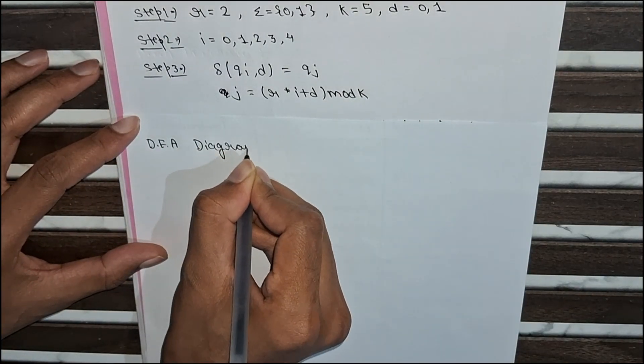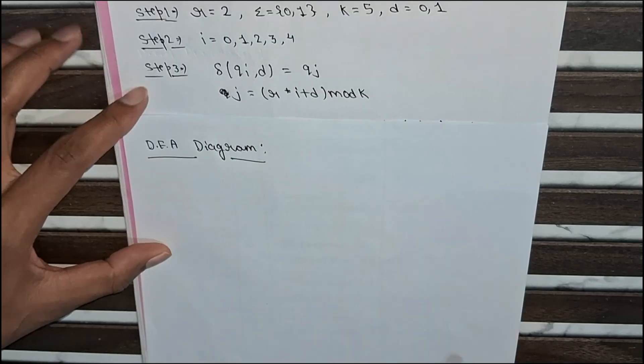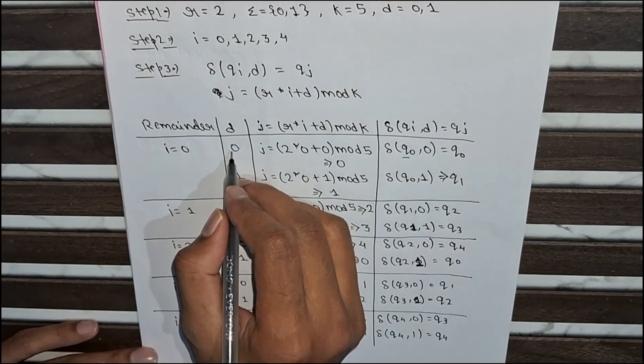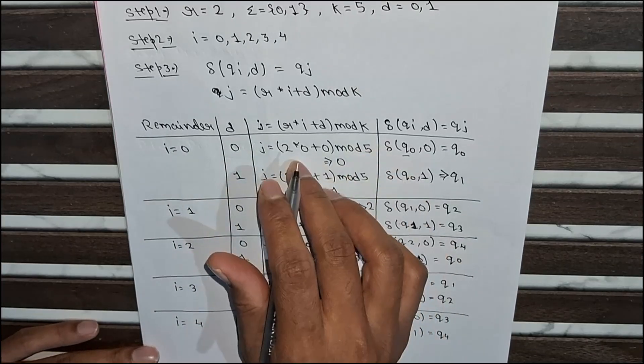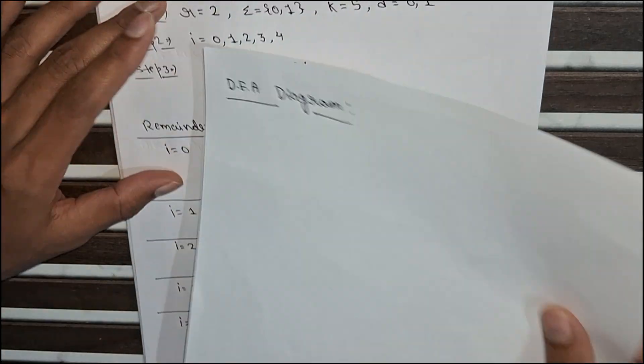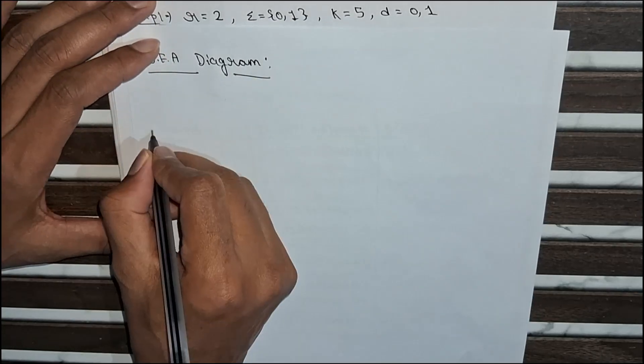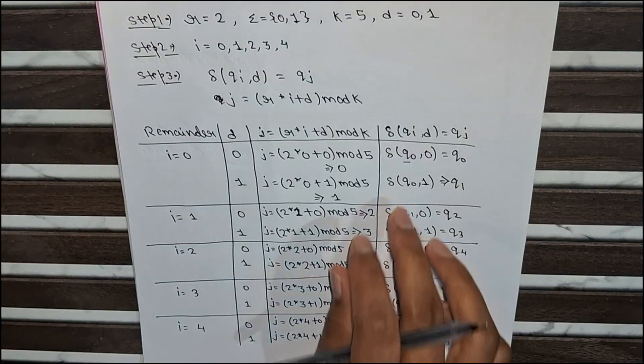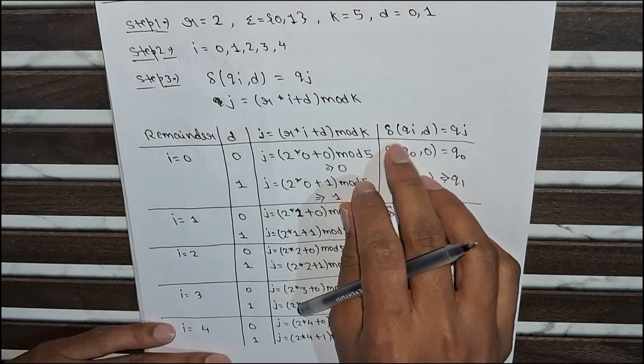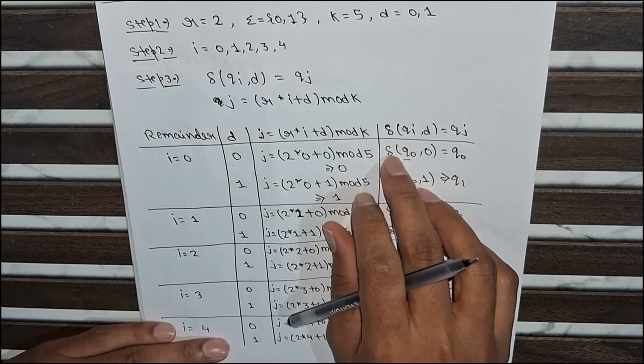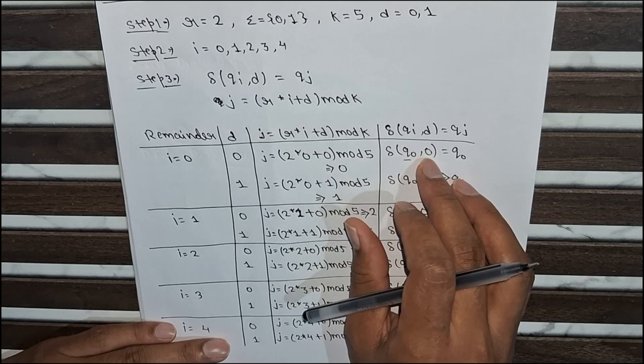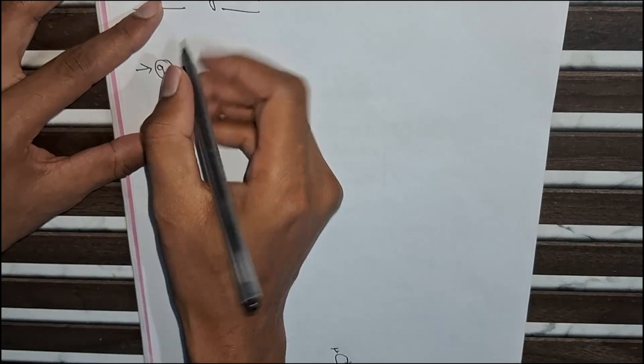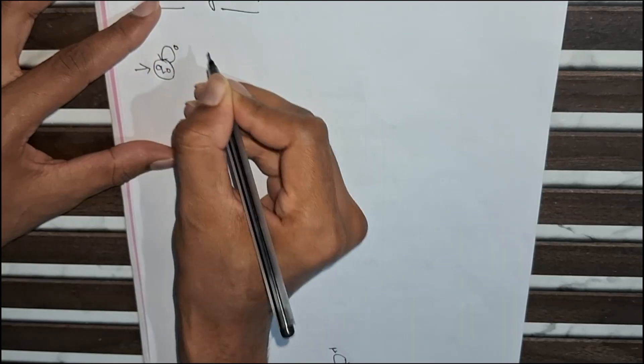From the table we can clearly see that q0 with remainder 0 and d value 0 will be our initial state. Now, with the transition formula, the state q0 with input symbol 0 will be a self-loop to q0.